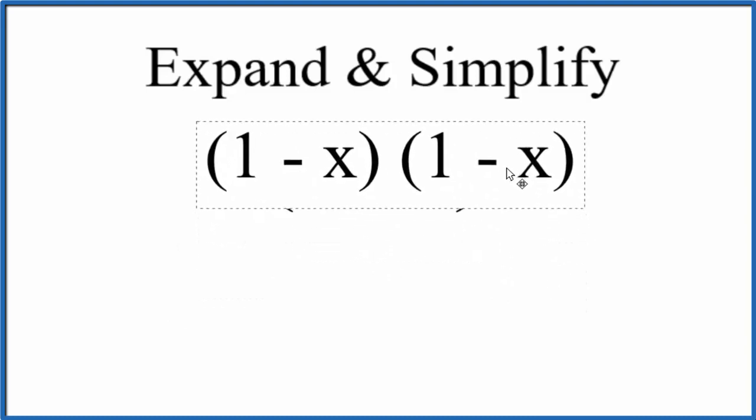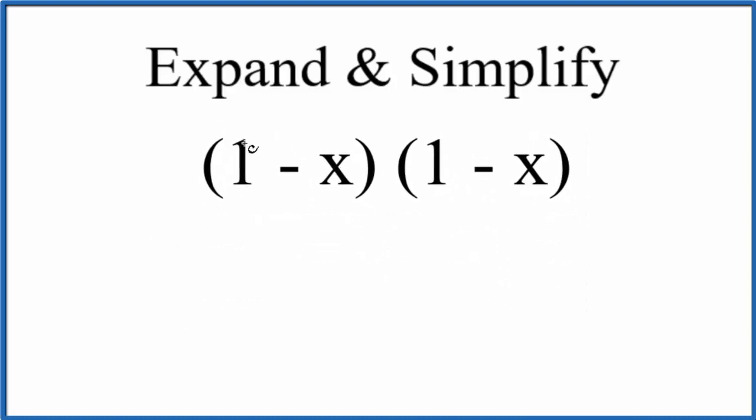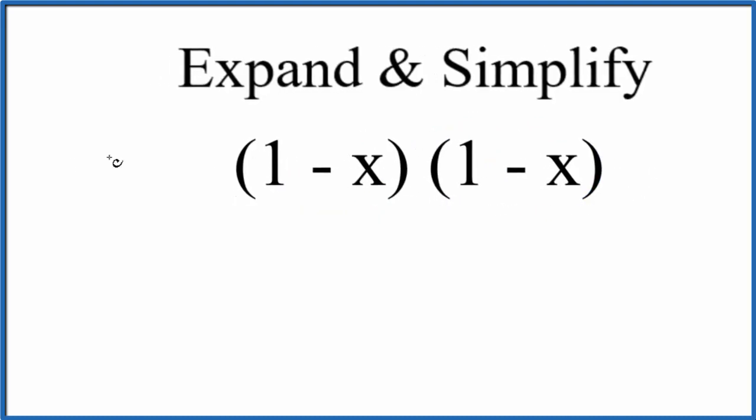So let's use this one here. What we're going to do is take this 1 and multiply it by 1 and then by negative x. Then we'll take negative x, multiply it by 1 and then negative x here. So we're just distributing these across this expression here.